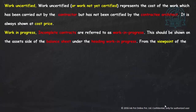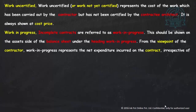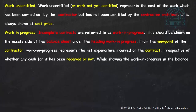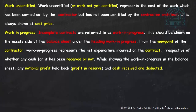Work in progress refers to incomplete contracts. It is shown on the asset side of the balance sheet because work has been done by the contractor but the amount has not yet been received — it is treated as accrued income. If there is any notional profit on it, that is deducted from work in progress.